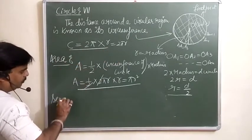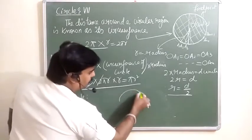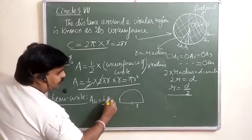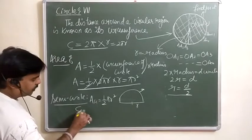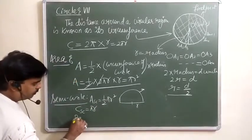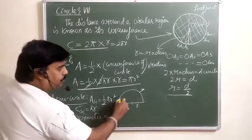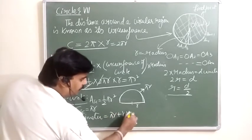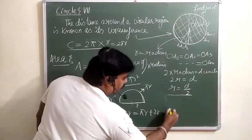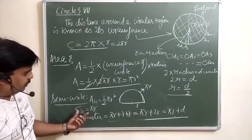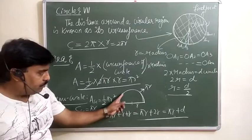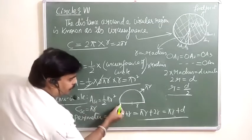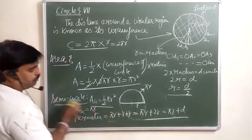Now the semicircle: if you divide the circle into two parts, you get a semicircle with radius r. The area of the semicircle is equal to half of the full circle area, that is (1/2)πr². The circumference of the semicircle is πr, and the perimeter including the diameter is πr + 2r.